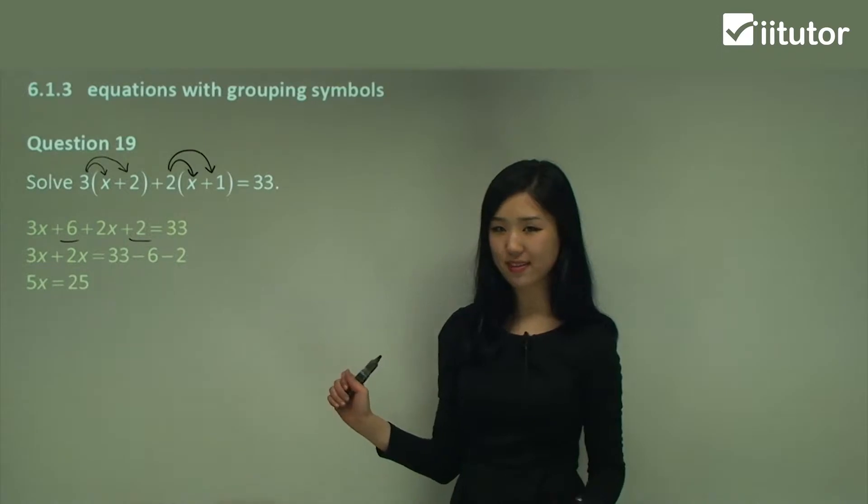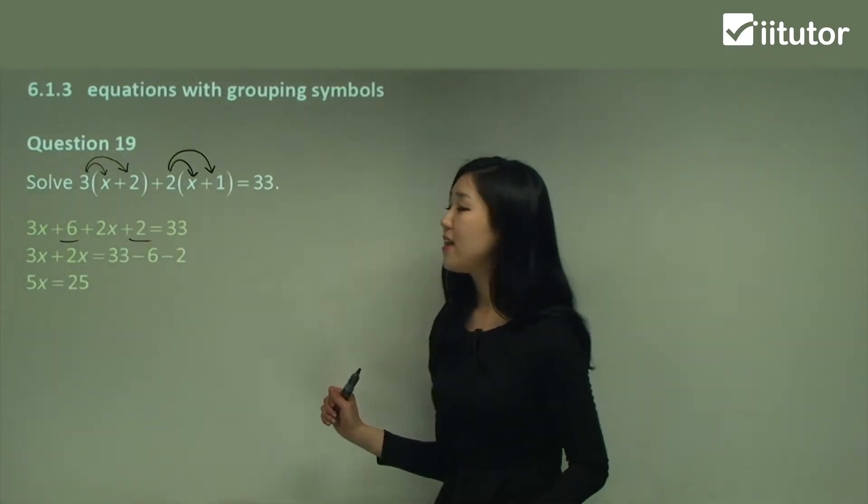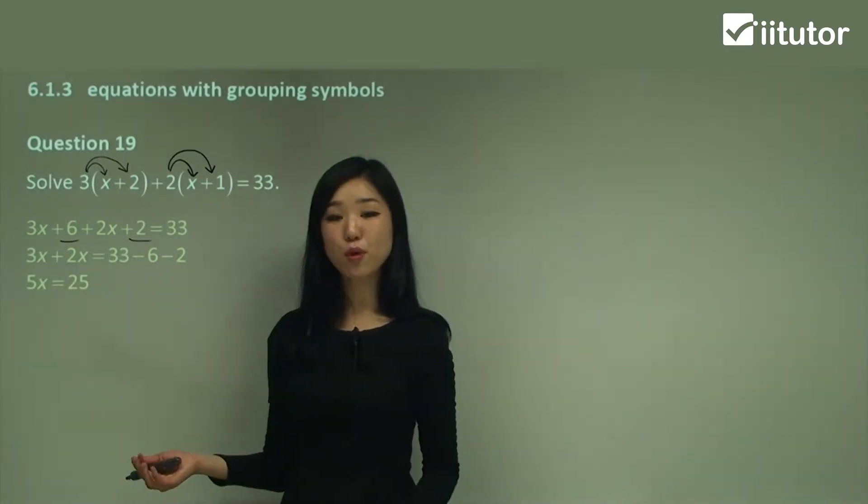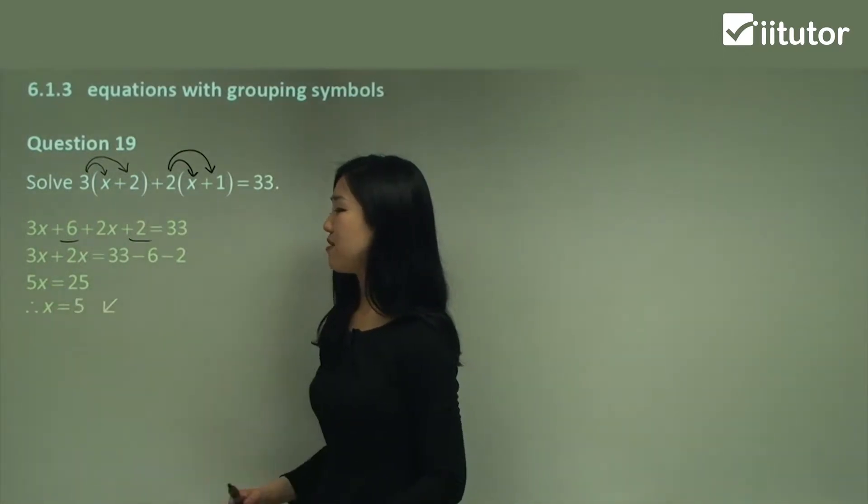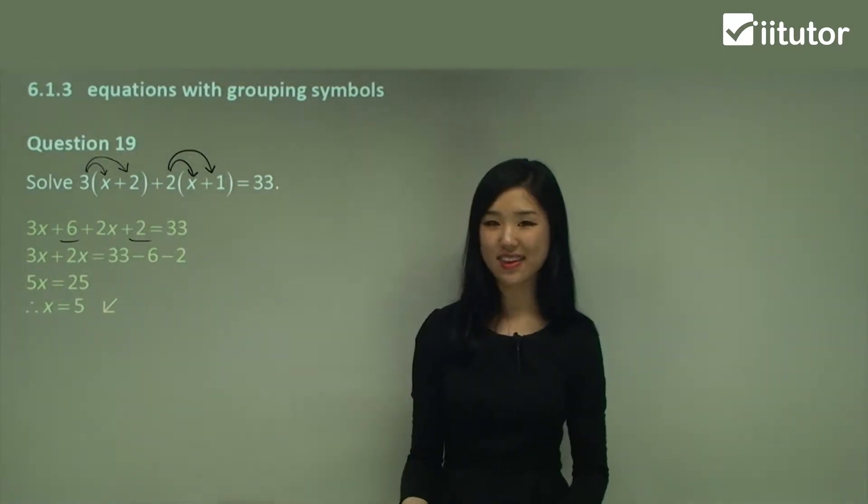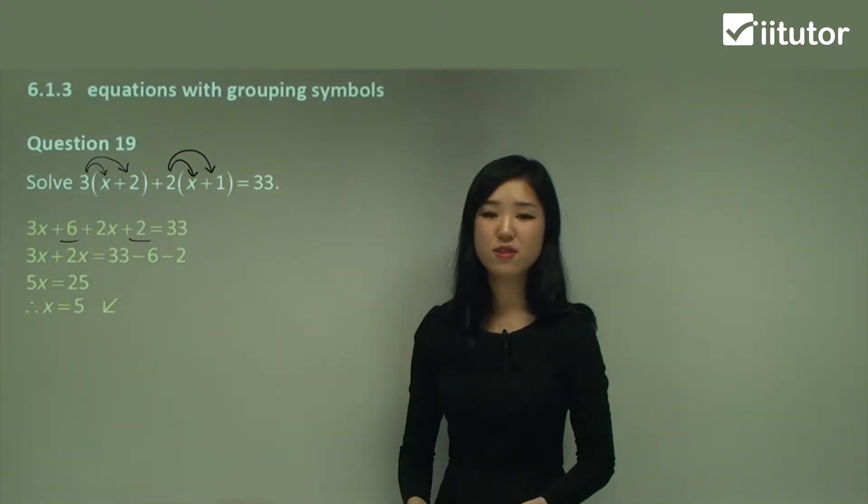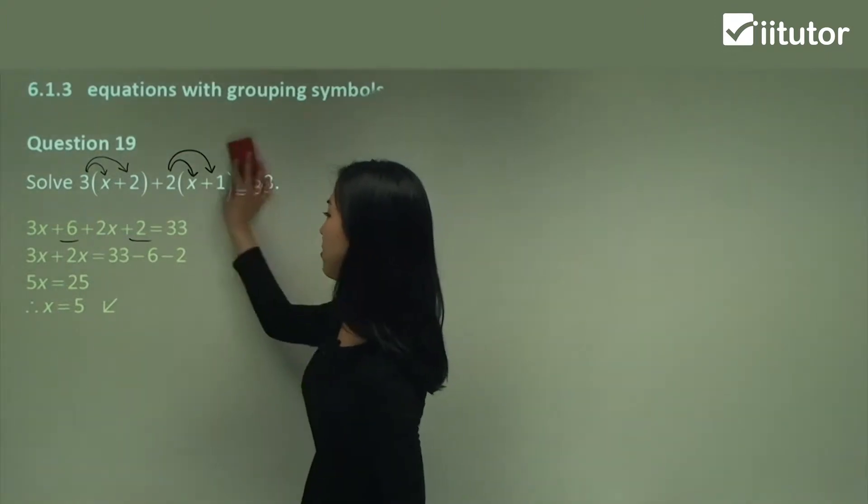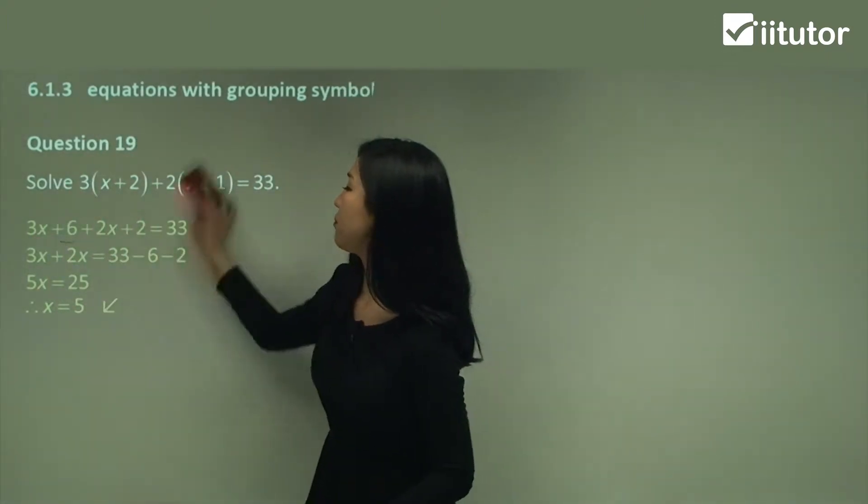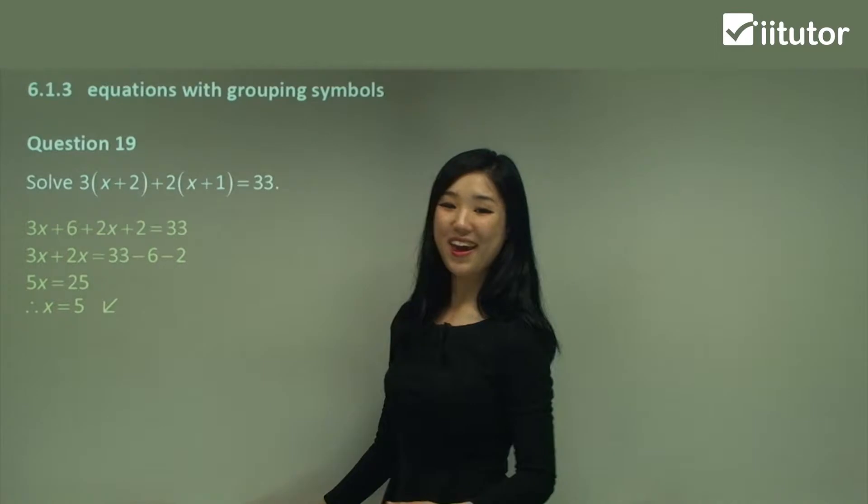Now 3x plus 2x is 5x and 33 minus 6 minus 2 it should be 25. Make sure you double check that and don't make any silly mistakes. Now see how 5x is 25. What do we do to get just x? Simply divide. So 25 divided by 5 is 5. That's the answer. So don't worry if you have grouping symbols, all you need to do is get rid of them. There's nothing really fancy about this one.